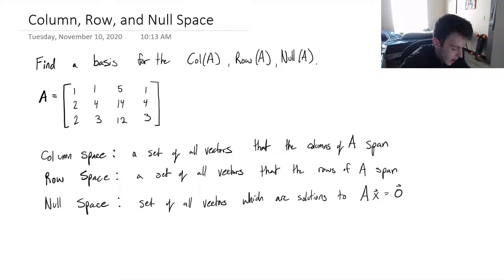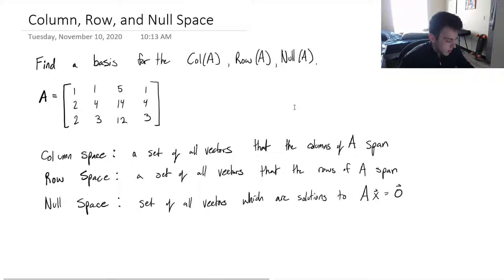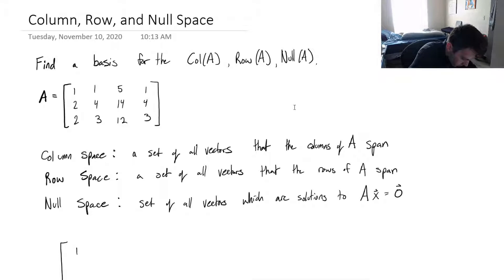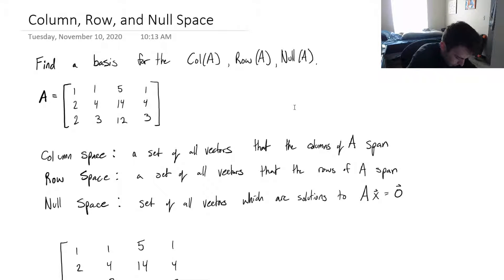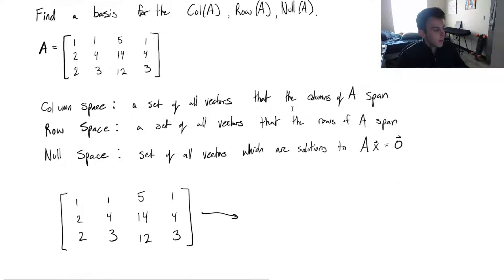So, what vectors can we plug into that matrix-vector product such that it will equal the zero vector? How do we compute these things? Well, if we actually just row reduce A, then it'll tell us quite a few things, depending on how we interpret the result of our reduced row echelon form. So let me row reduce this right now.